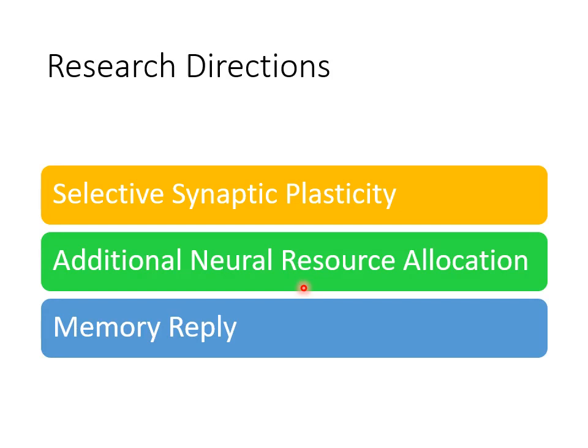We are going to talk about three possible solutions to lifelong learning. The first solution is called Selective Synaptic Plasticity. From its name, you may not be able to know what exactly this method does.